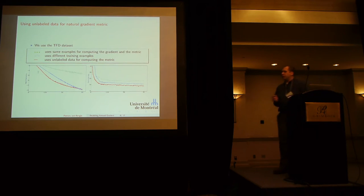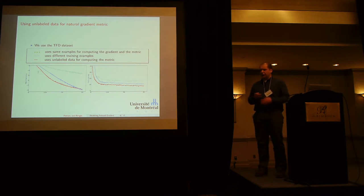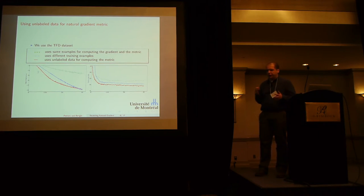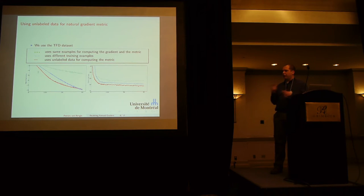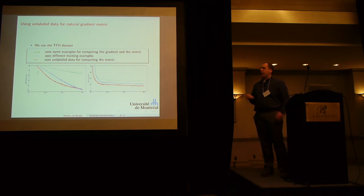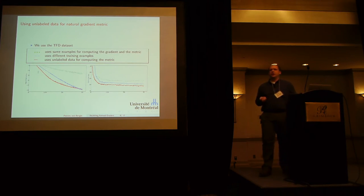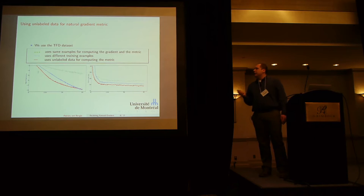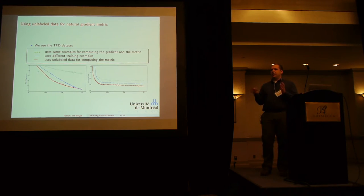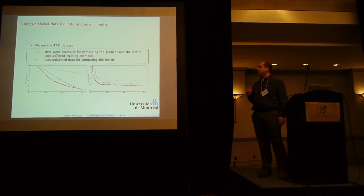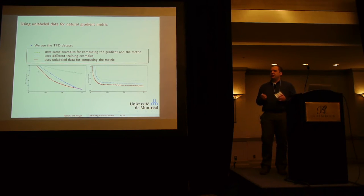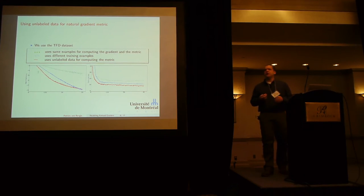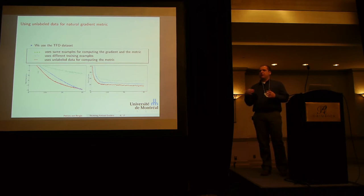We also looked at other properties of natural gradient. Looking at the formula as a trust region method, you notice you have to evaluate two expectations. We asked: what happens if you use different examples to compute these expectations? Our intuition is that using different examples reduces the correlation between them and gives better behavior. What's even more interesting is you don't actually need labels to compute the Fisher information matrix, so you can use unlabeled data. This acts like a regularizer, because you're preventing steps that would move the model far away from the training distribution.